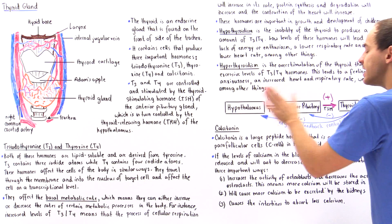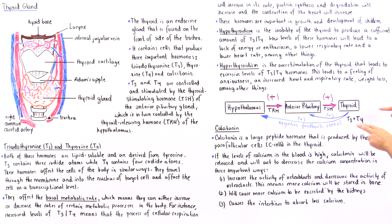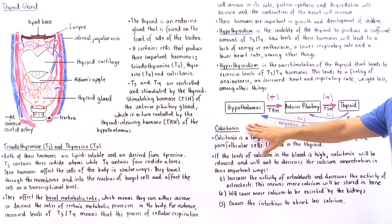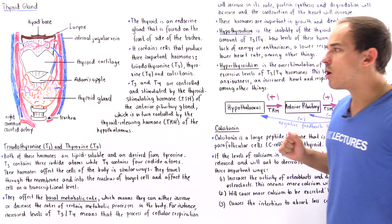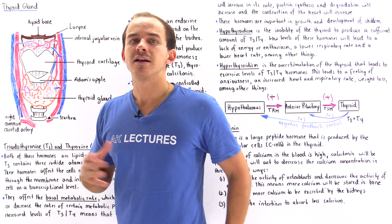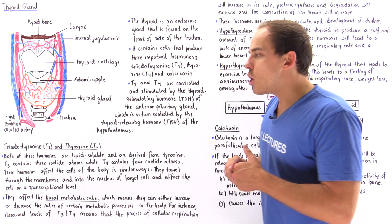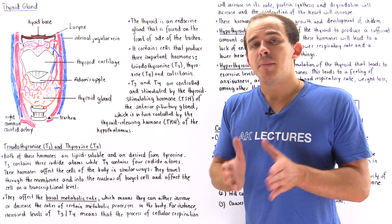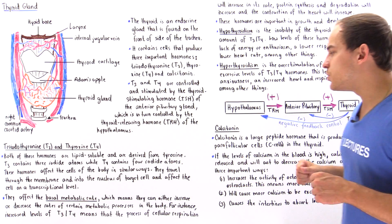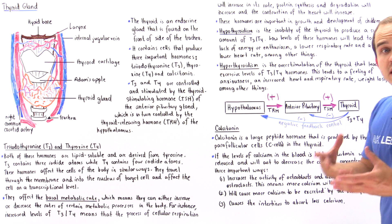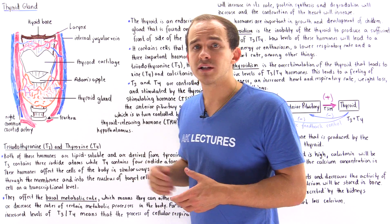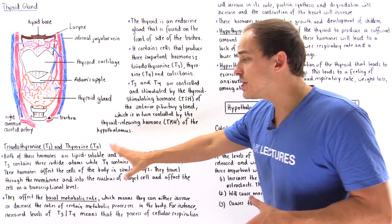This inhibition prevents the further release of these hormones, so T3 and T4 levels stabilize over time. Now let's move on to the final type of hormone released by the thyroid gland — calcitonin. While follicular cells release and produce T3 and T4, the parafollicular cells, also known as C cells, are the cells that release and produce calcitonin inside our thyroid gland.